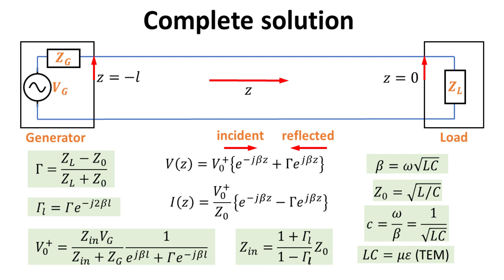The general solution for the voltage and current along the lines depends only on three parameters: the voltage amplitude V0-plus, the phase constant beta, and the reflection coefficient gamma. Beta depends only on the line parameters and frequency. Gamma can be determined by specifying the load impedance, in conjunction with the characteristic impedance Z0. With gamma, it allows us to determine gamma_L and the input impedance Z_in. The last unknown V0-plus can then be determined by specifying the generator voltage and impedance. The lossless TEM transmission line is dispersionless, where electromagnetic waves propagate at the same speed regardless of frequency.